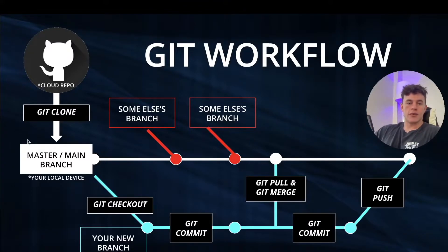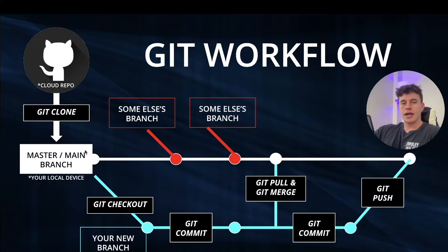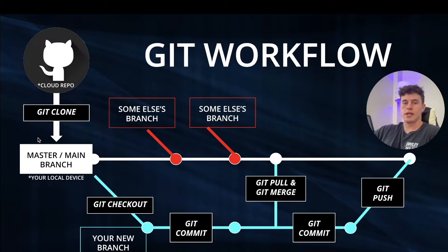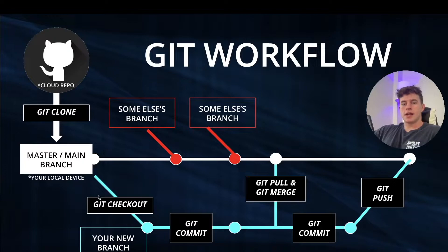When the code comes down onto your device you'll be in what is known as the master or main branch, which can be thought of as the source of all truth — the one true timeline of the code. From here it's generally not best practice to dive straight into the main branch and start making changes. The first thing you want to do is use git checkout, which allows you to branch off into your own branch.